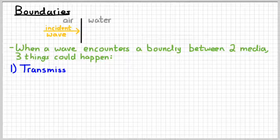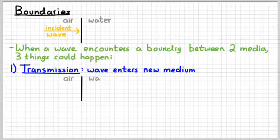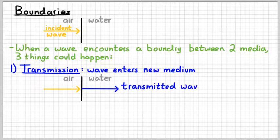The first is called transmission. What that means is that the wave just enters the new medium and keeps on moving. A picture might look something like this. We would say that that wave has been transmitted — like when light goes through a piece of glass. It's just transmitted through it, it goes right through.